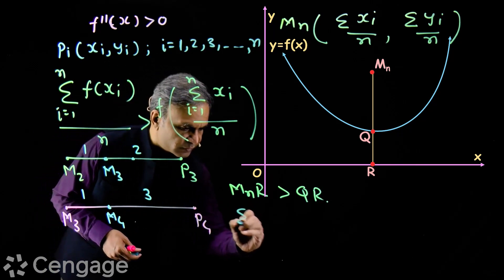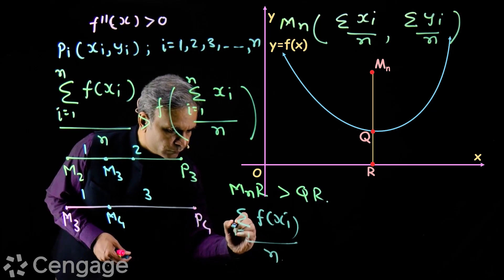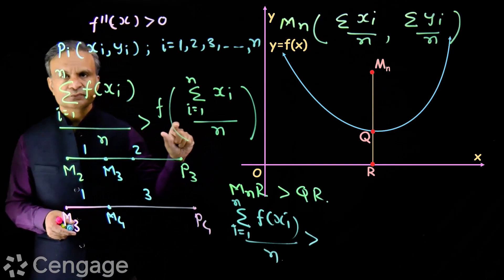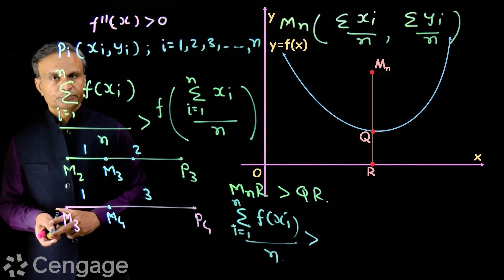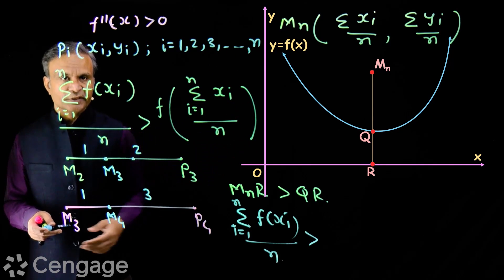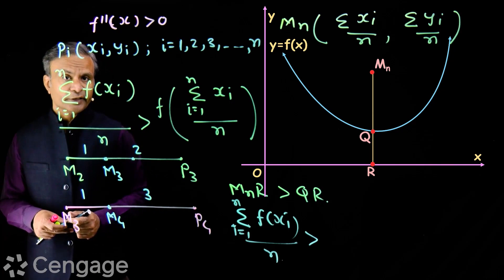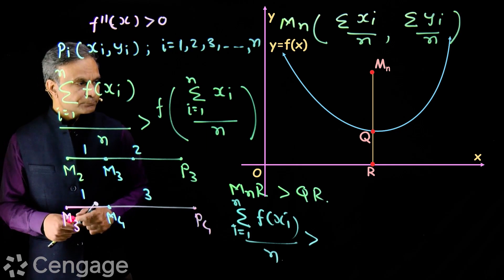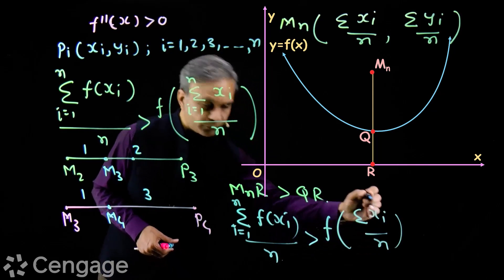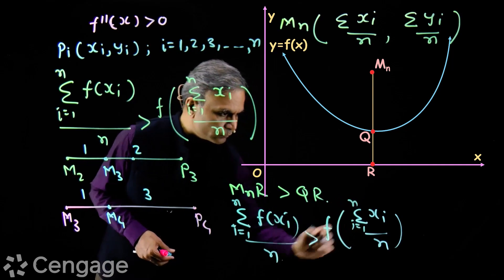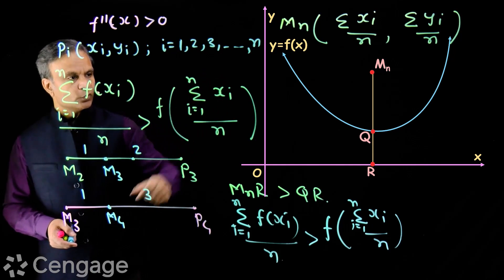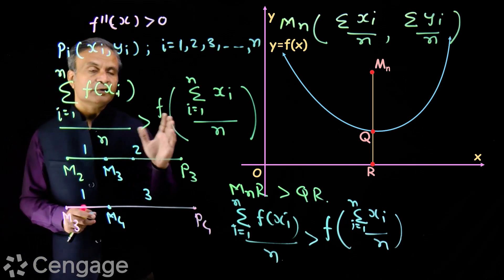The ordinate of Mn is Σyi/n, which means Σf(xi)/n, where i is moving from 1 to n. And the length QR will be the ordinate of point Q. The x-coordinate of point Q is Σxi/n — since it is a vertical line, all points have the same x-coordinate. And since point Q lies on the curve, its ordinate will be f(Σxi/n). Therefore the inequality is proved: Σf(xi)/n is greater than f(Σxi/n). This holds when the graph of the function is concave upward.